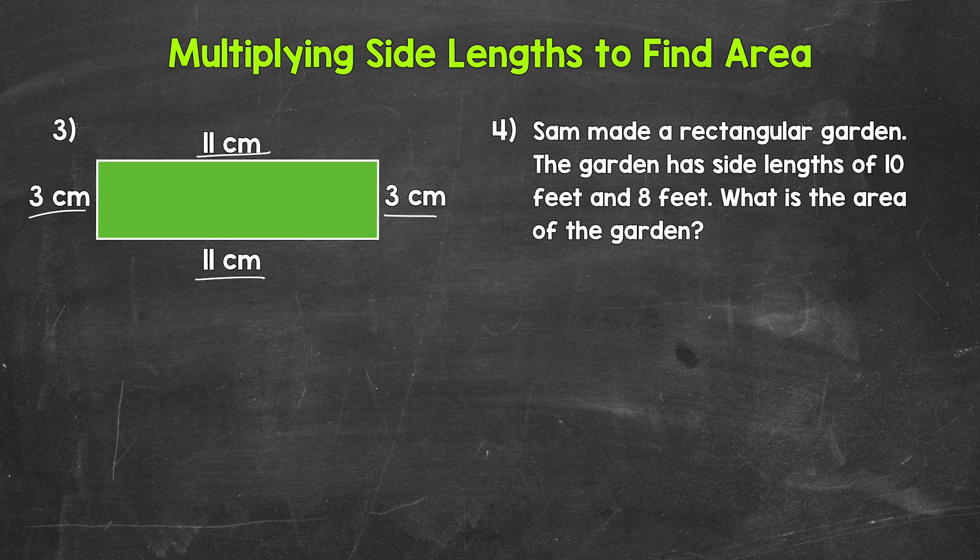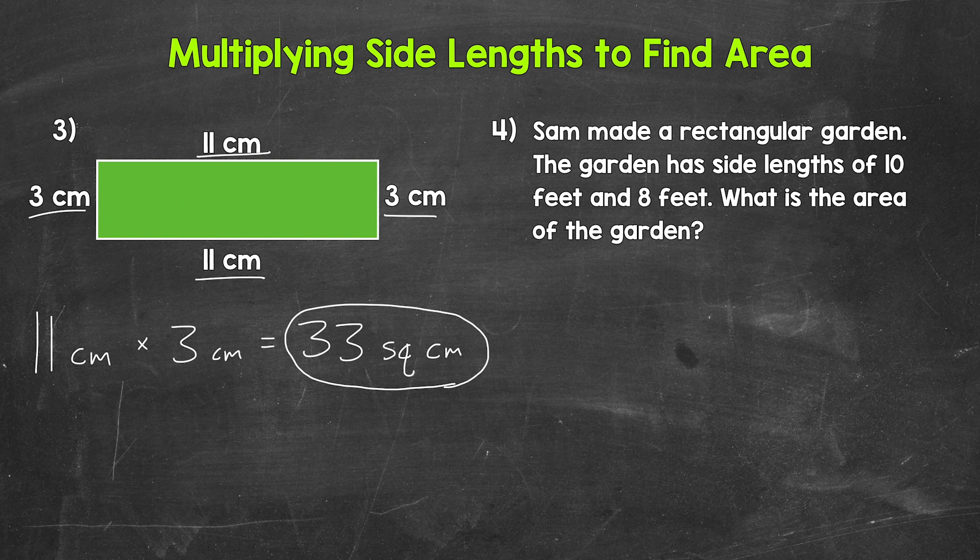We take a three centimeter side length and multiply it by an 11 centimeter side length. So we can do three times 11 or 11 times three. Let's do 11 centimeters times three centimeters. 11 times three gives us 33. And this is square centimeters. So let's write that out. And I'm actually going to use the abbreviation here. So let's put SQ for square and CM for centimeters. So this is the area of that rectangle.